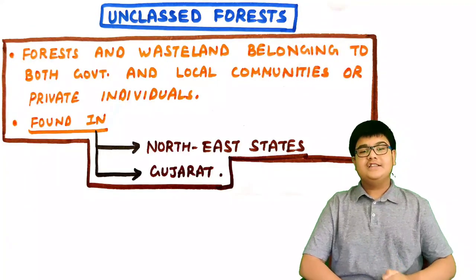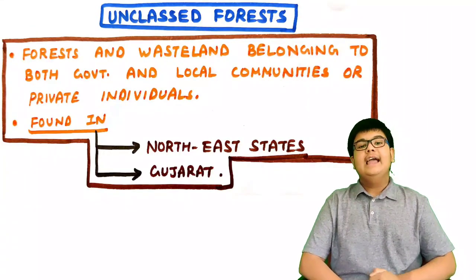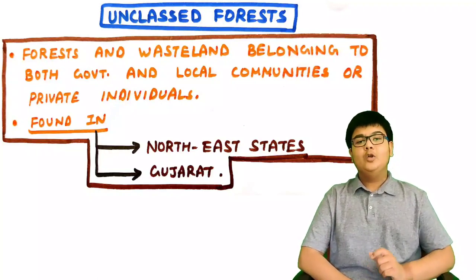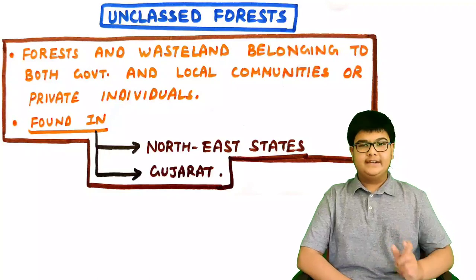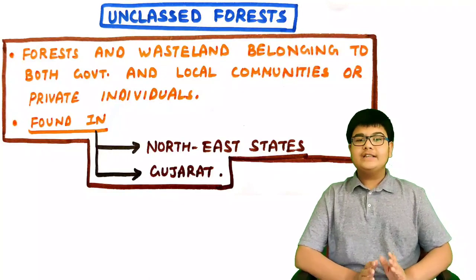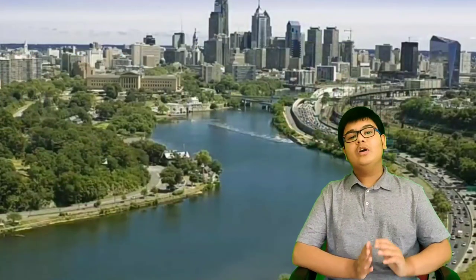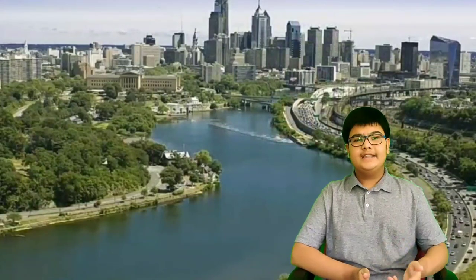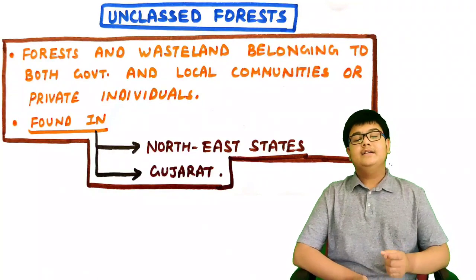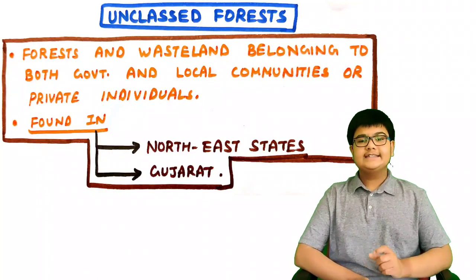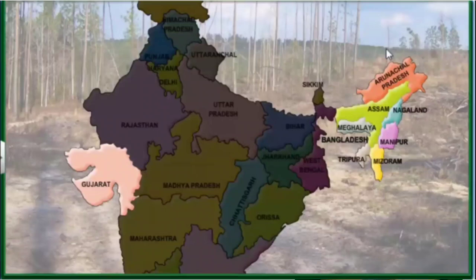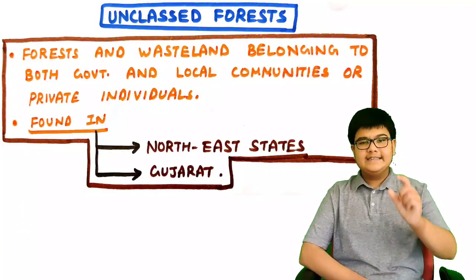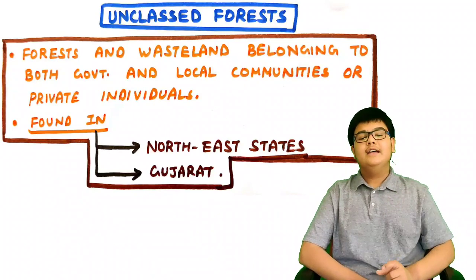The third type is unclassed forests. These are forests and wastelands belonging to both government and local communities or private individuals. These forests are found in the northeastern states, Gujarat, etc., where they exist in large quantities, though other states also have them.